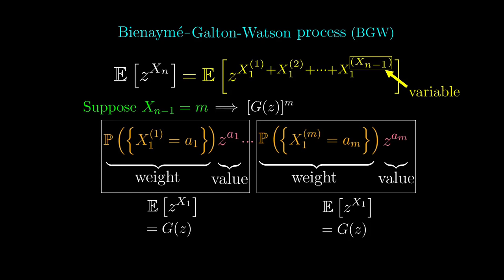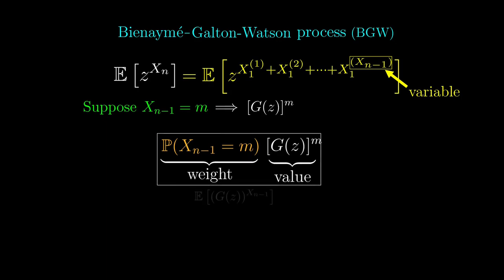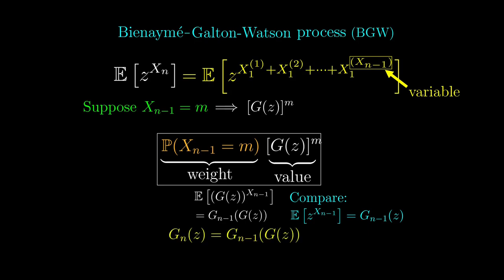However, xn-1 is really a variable. This temporary result only happens sometimes. More precisely, this g of z to the m will happen with exactly this probability. This is again in the form of weighted values. And so, this can be expressed as a weighted average of these powers of g of z. This is just the generating function for xn-1, but applied to g of z as an argument. In other words, gn of z is gn-1 applied to g of z. This is true for all n larger than 1.